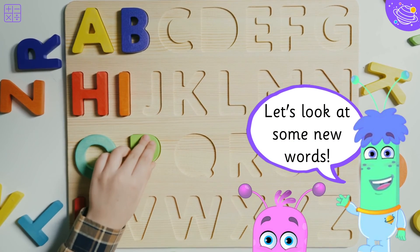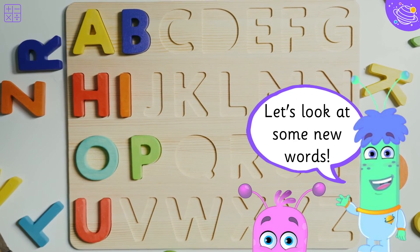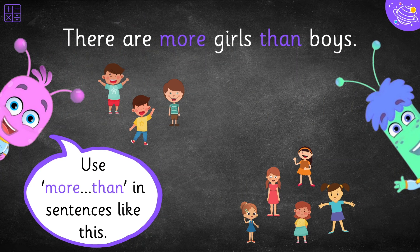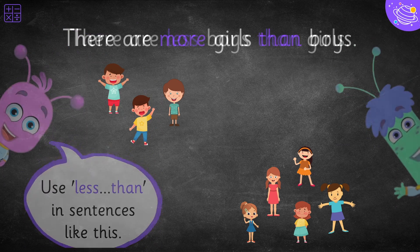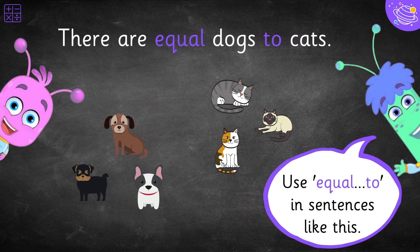Let's look at some new words. Use more and than in sentences like this: There are more girls than boys. Use less than in sentences like this: There are less boys than girls. Use equal to in sentences like this: There are equal dogs to cats.